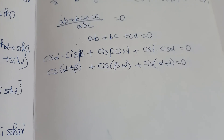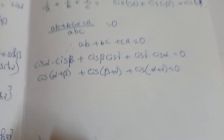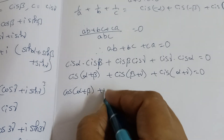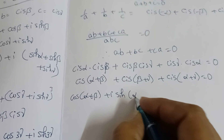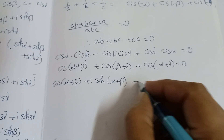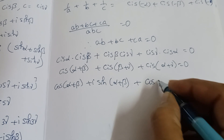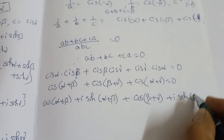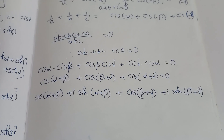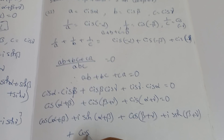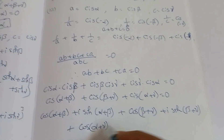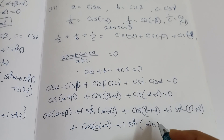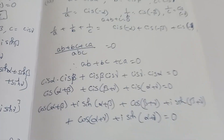Expanding each cis term: cis(α+β) = cos(α+β) + i sin(α+β), cis(β+γ) = cos(β+γ) + i sin(β+γ), cis(α+γ) = cos(α+γ) + i sin(α+γ). Adding them all together and setting equal to 0.